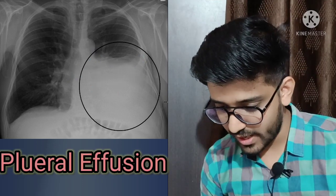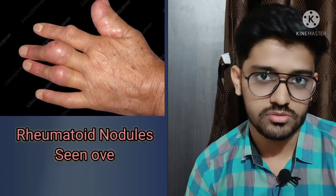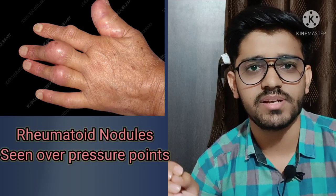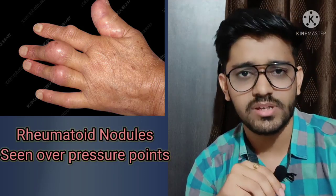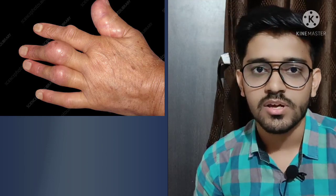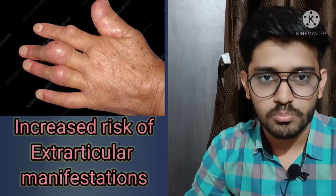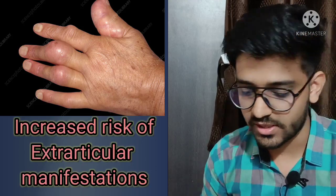The next image shows rheumatoid nodules on the hand. These are usually seen at pressure points such as the elbow and the hand. Rheumatoid nodules are associated with poor prognosis and increased disease activity in rheumatoid arthritis.